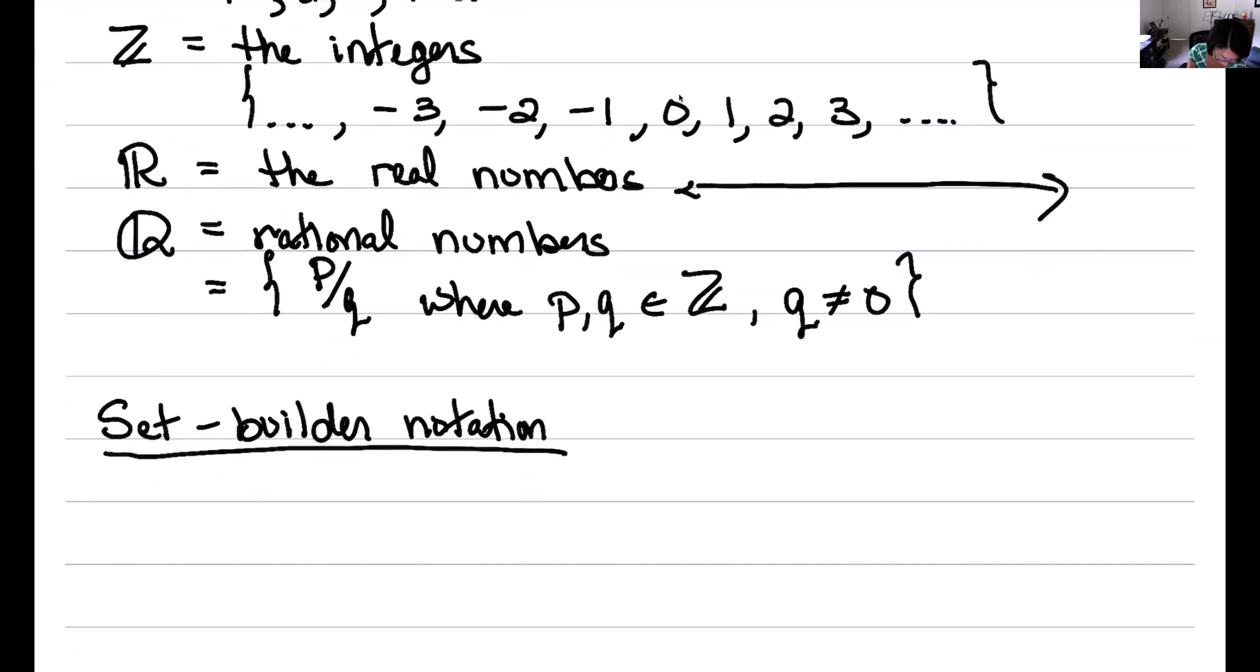For example, I might write down the following. So I might write down something like the x in ℝ, so the x that are real numbers, and then in our book they put a colon there, and we read this as 'such that', such, so the x's that are real numbers such that x² = 1.